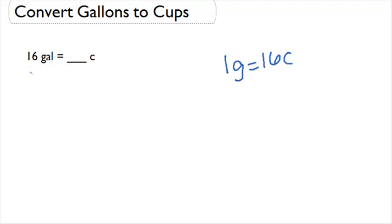So instead of dividing our 16 by 16 and getting 1, we're actually going to want to multiply our 16 by 16, because every one of those 16 gallons has 16 cups in it. Now 16 times 16 is 256. So in 16 gallons there are 256 cups.